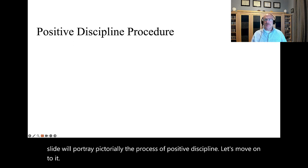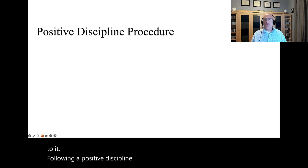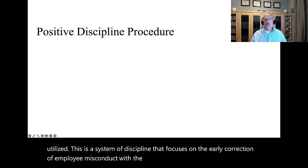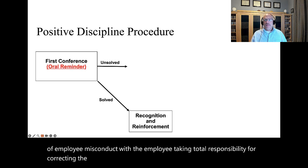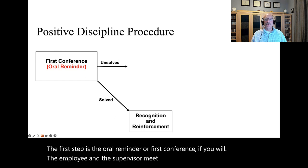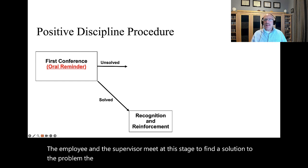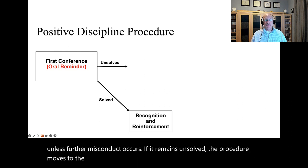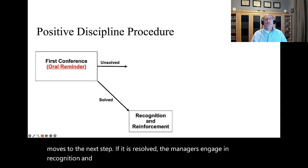Following a positive discipline process, positive or non-punitive discipline is utilized. This is a system of discipline that focuses on the early correction of employee misconduct, with the employee taking total responsibility for correcting the problem. The first step is the oral reminder, or first conference. The employee and the supervisor meet at this stage to find a solution to the problem. The outcome of this meeting is not typically put into writing unless further misconduct occurs. If it remains unsolved, the procedure moves to the next step. If it is resolved, the managers engage in recognition and reinforcement of the newly appropriate behavior.